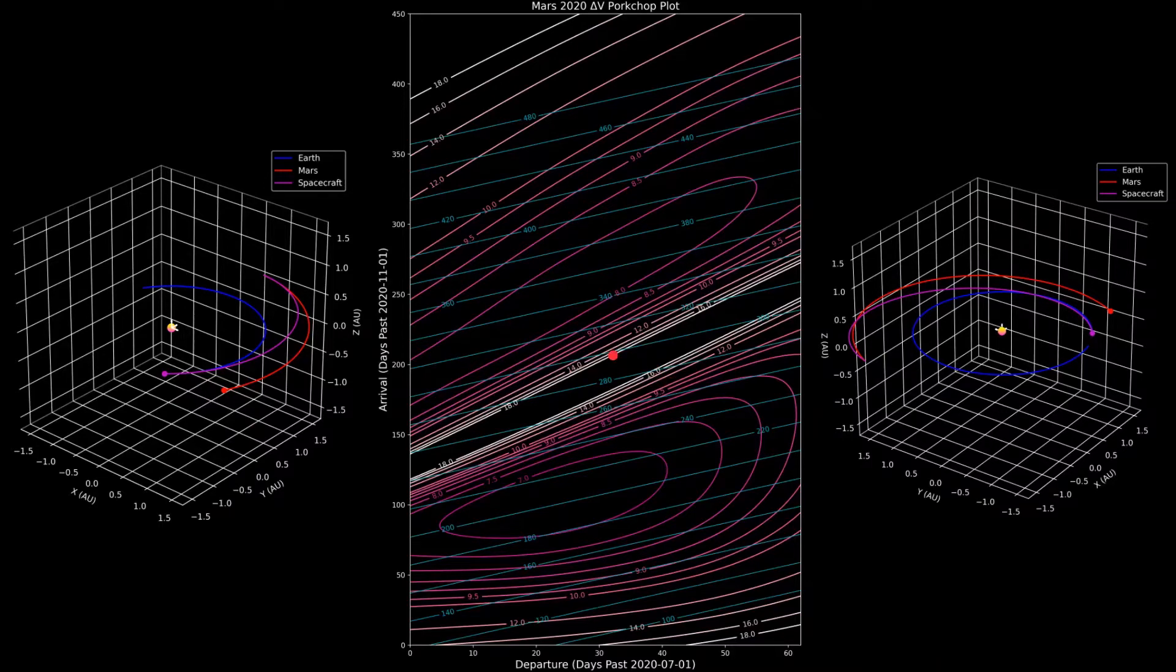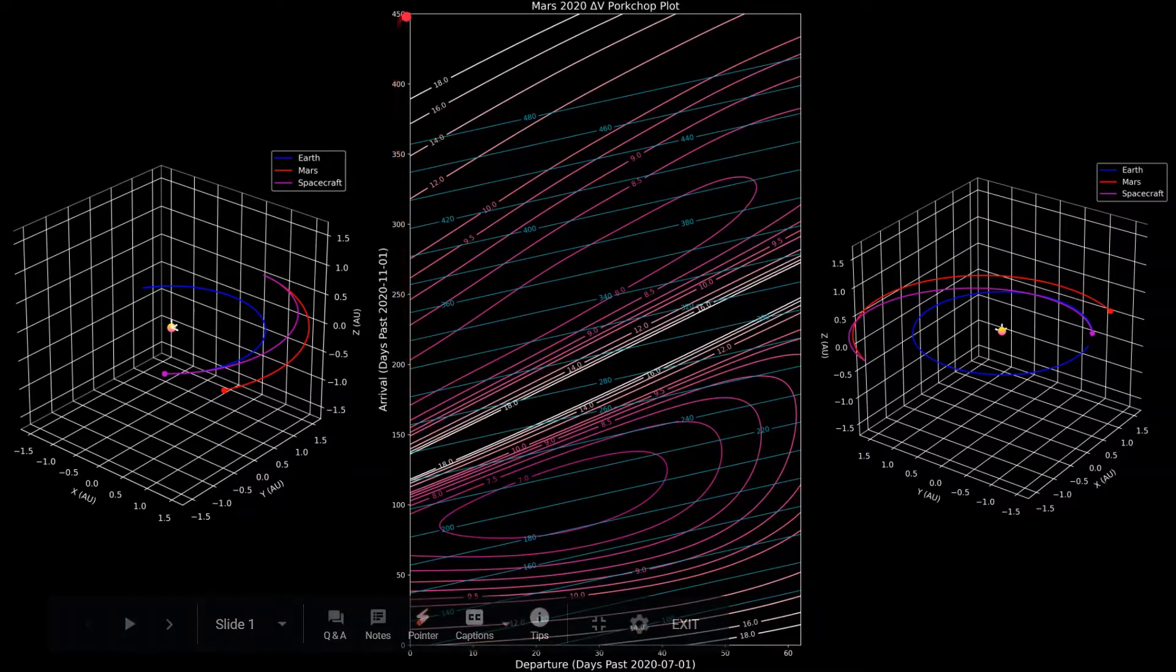The Y axis is similar, but represents Mars arrival dates. So when you want to get to Mars, with a zero point in this example corresponding to 2020 November 1, and then increases as the Y axis goes up.